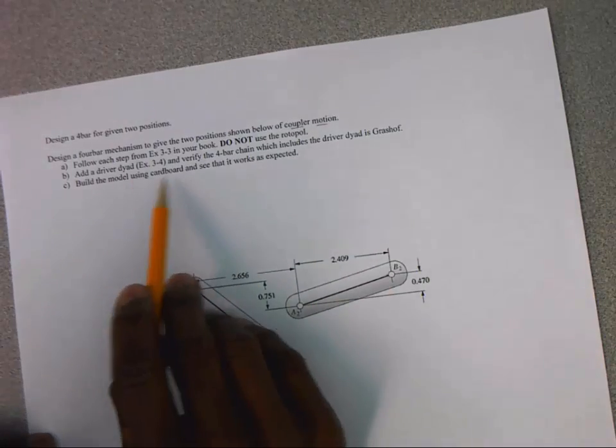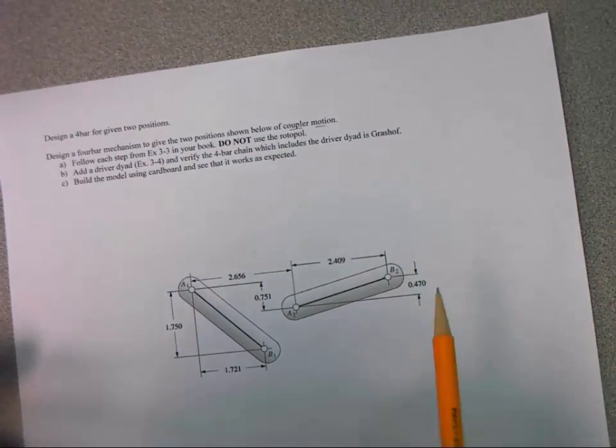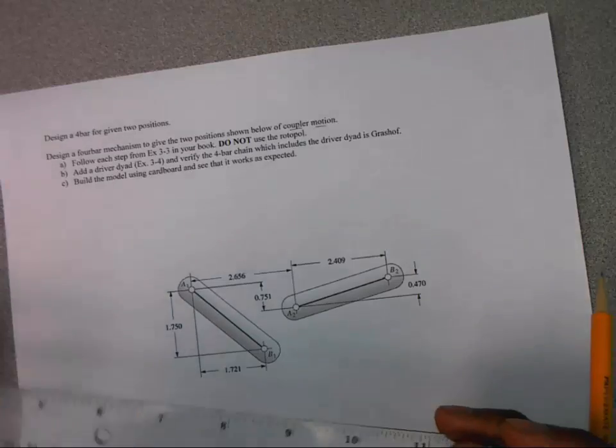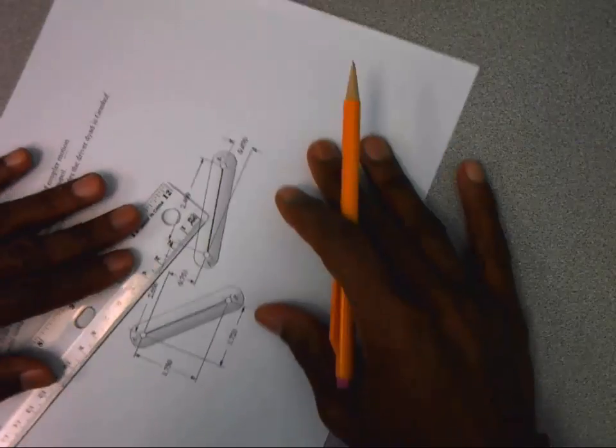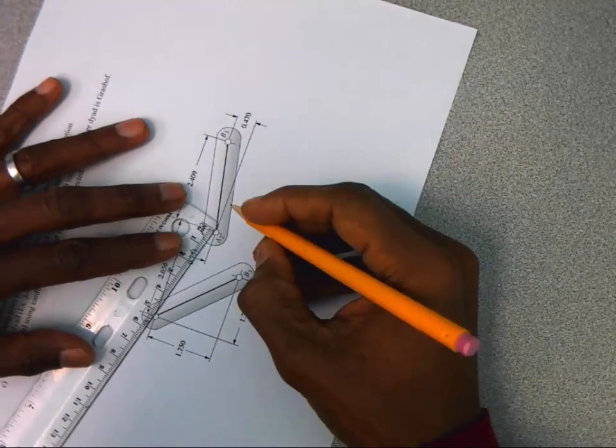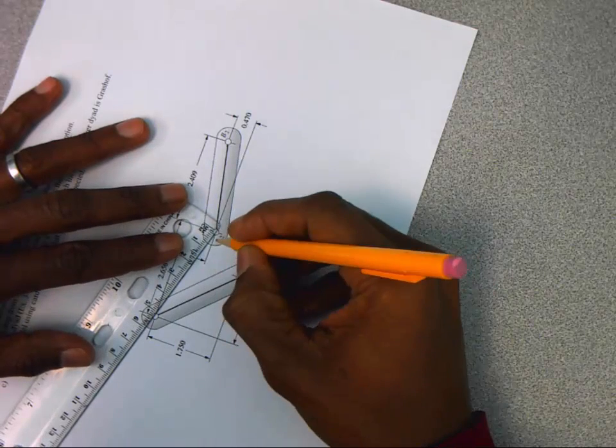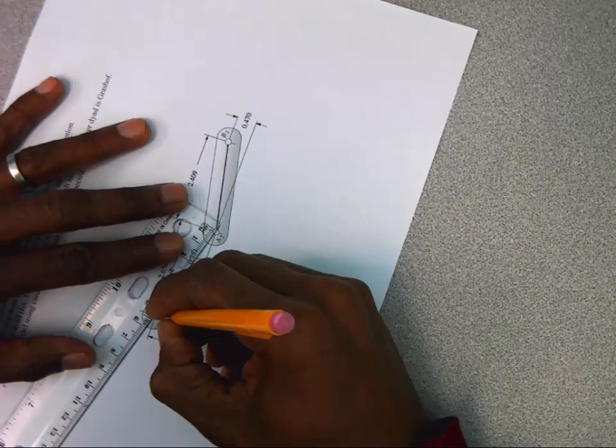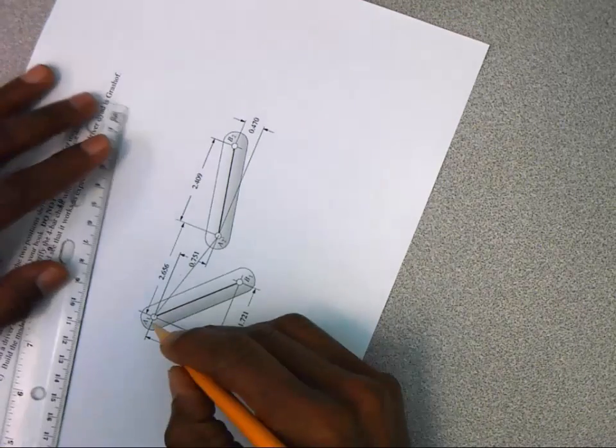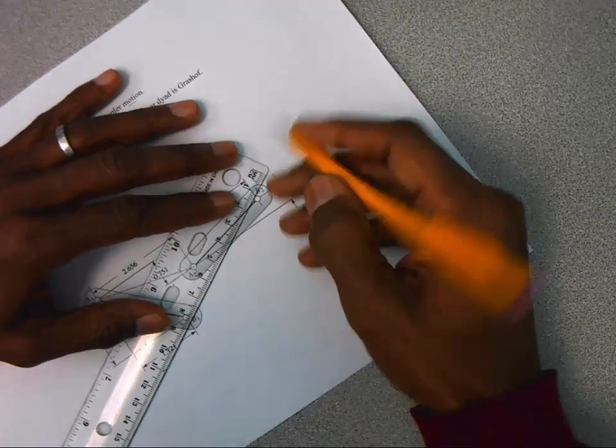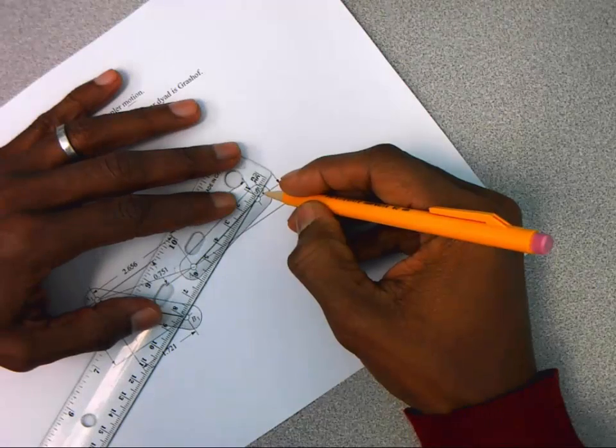We're not going to be building the cardboard model in this solution. So the first thing we need to do is connect the points that are the same but at different times. That would be point A at time 1 and time 2 and point B at time 1 and time 2.